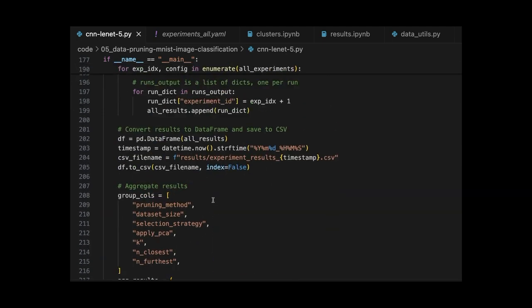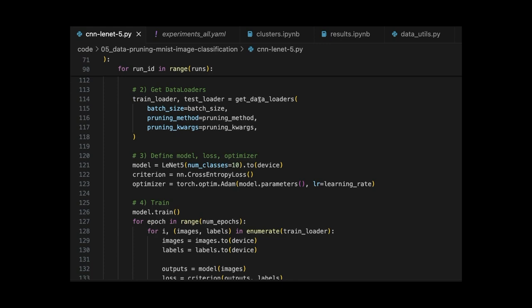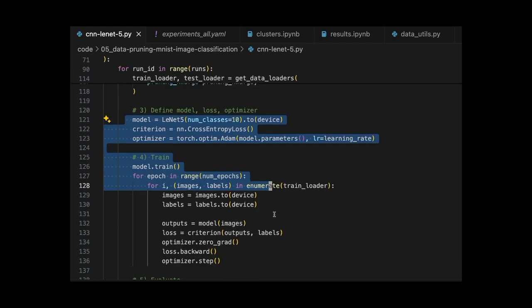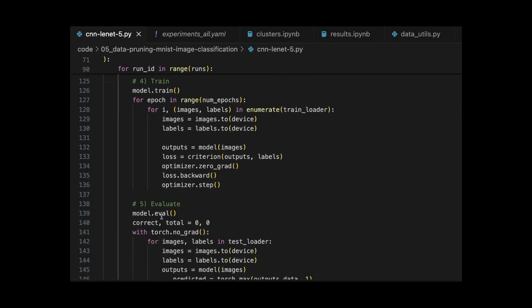So a lot of this extra code here is really just the test harness stuff. The core part of the experiment is really just getting the data from one of these data pruning strategies. Then our basic train loop here, where we instantiate the model, provide our loss function, provide our optimizer to help fit the model, train the actual model, and then evaluate against our test data.